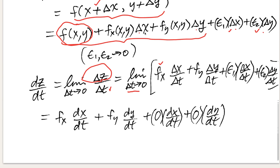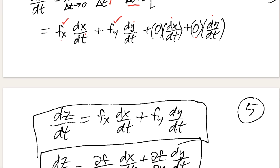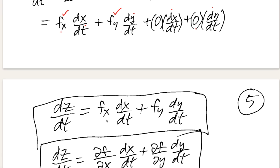So I'd have f sub x times delta x over delta t, plus f sub y times delta y over delta t, plus the epsilon terms divided by delta t. When I take the limit as delta t approaches zero: f sub x is evaluated at the original point, delta x over delta t becomes dx over dt, delta y over delta t becomes dy over dt. The epsilon₁ and epsilon₂ go to zero. So the limit becomes: dz over dt equals f sub x times dx over dt plus f sub y times dy over dt.